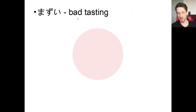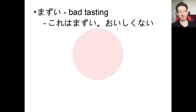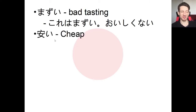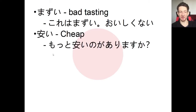First we saw mazui — bad tasting. Kore wa mazui, oishiku nai. Oishii means something is good; the opposite of oishii is mazui. Oishiku nai means this is not good. Then we saw yasui — cheap. This is usually used for price; you wouldn't say cheap quality. It just means cheap as in not expensive.